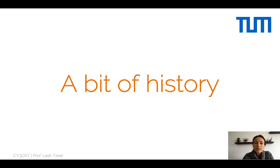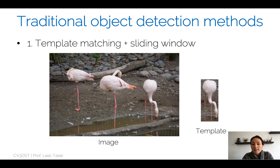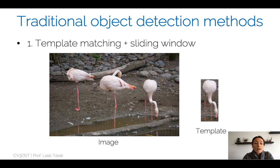Let's start with a bit of history — nothing about deep learning just yet. Let's see how object detection was approached before deep learning appeared. Traditional object detection methods relied on template matching plus sliding window. We had an image with different objects — in this case, flamingos — and we had a template, which was a small image depicting one object that we wanted to detect. Usually this template showed the object in the exact same position where we expected to see it in the test image.